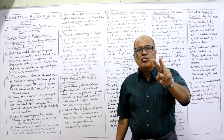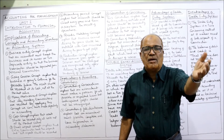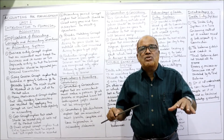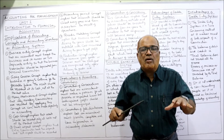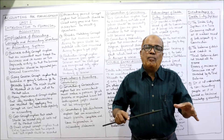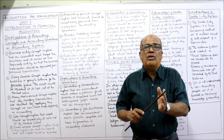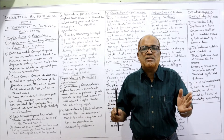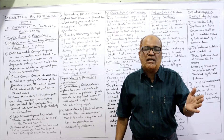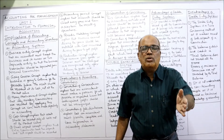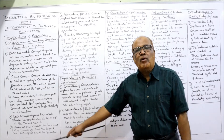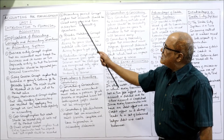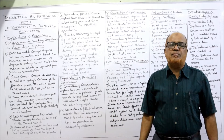Both aspects should be recorded. If we record both aspects, then accounting will be complete and we can ascertain the operating result and financial position. That is the implication of following the dual aspect concept. The next is the accounting period concept, which means the life of the business is divided into parts, each part consisting of a 12-month period.